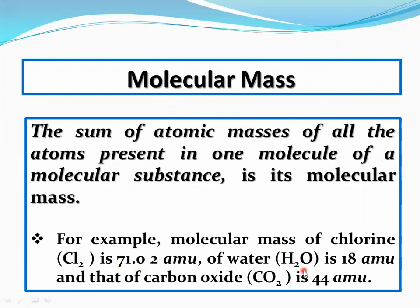The molecular mass of water H2O is 18: oxygen is 16 and two hydrogen atoms each having atomic mass 1 AMU, so 16 plus 2 equals 18 AMU. For carbon dioxide, one carbon and two oxygen atoms: carbon has mass number 12 and oxygen is 16, so two oxygen atoms give 32, plus 12 equals 44 AMU.